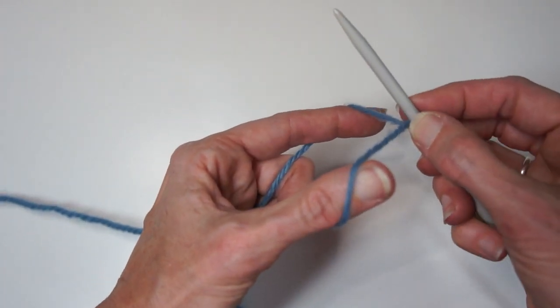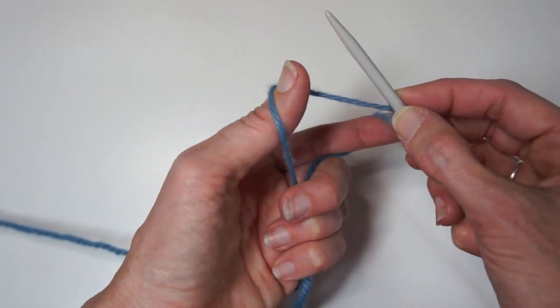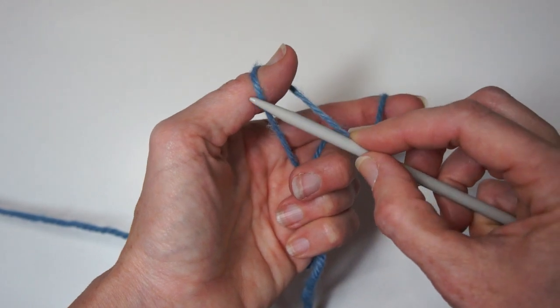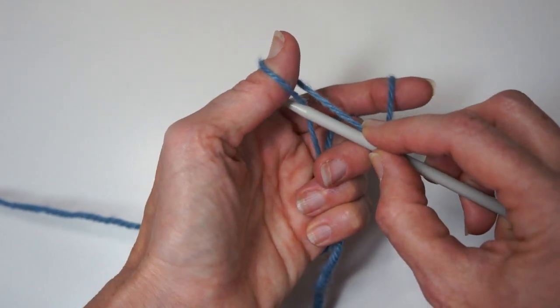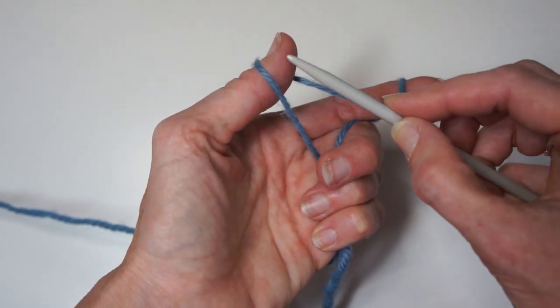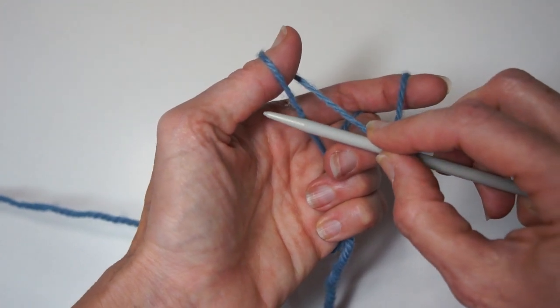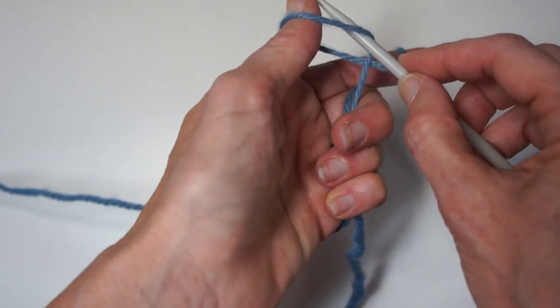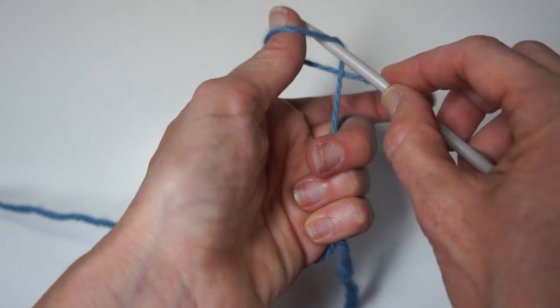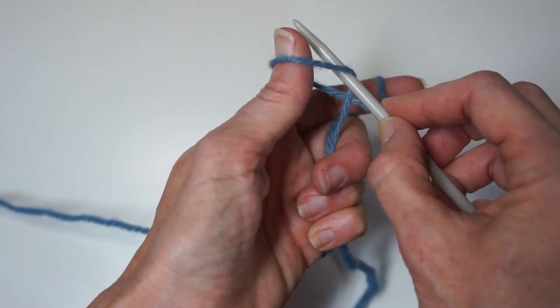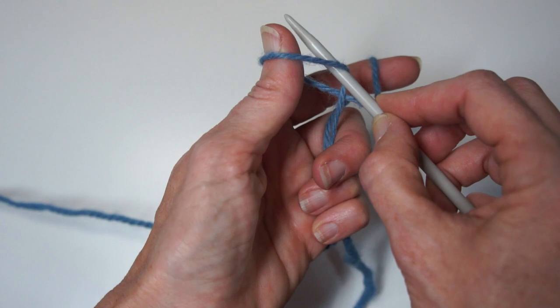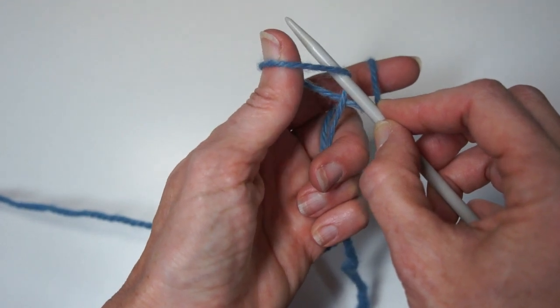Now we're going to be casting on by going under the piece of yarn on the thumb closest to you and you're going to go in front of it and then up into the loop. Notice that makes a closed loop. Notice it also looks like you're entering a stitch on the needle as if your thumb is the knitting needle.